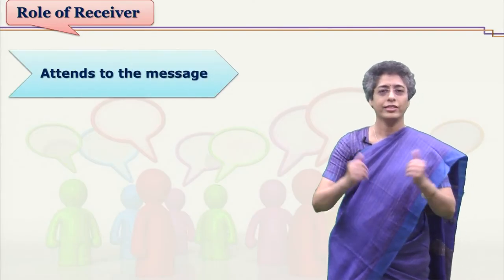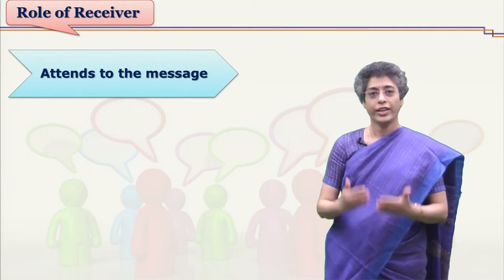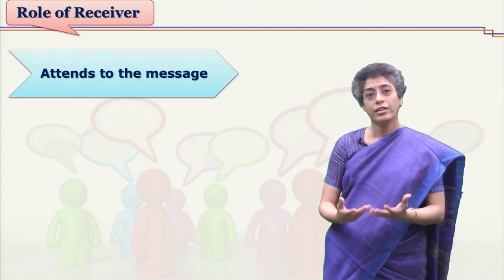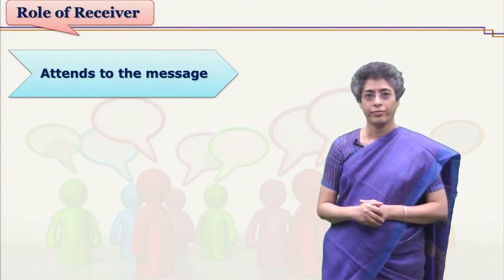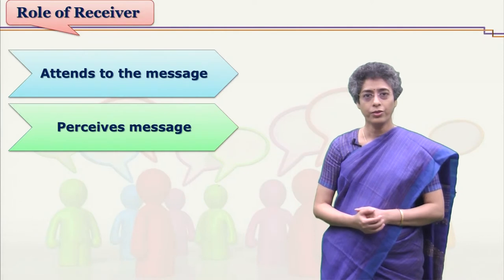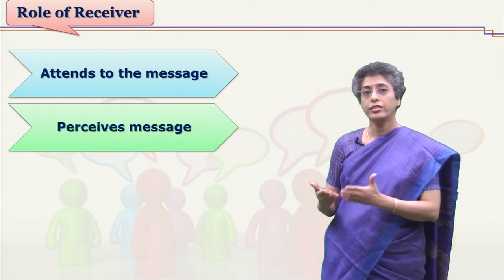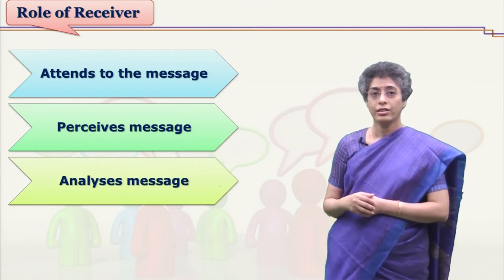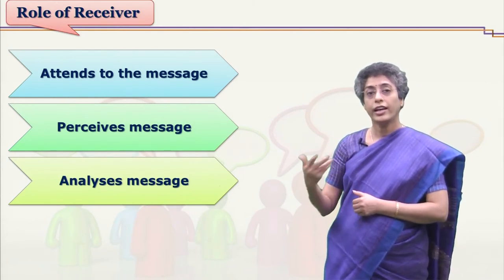Let us see what a receiver does. First, the receiver has to attend to the message — whenever the sender sends a message and the receiver understands that some message is reaching them, the receiver first attends to it. After attending, the receiver perceives the message. It is not only about attending; you need to perceive the message in its correct form, knowing what language or understanding is needed, and then analyze the message.